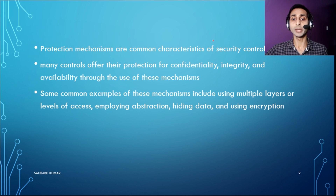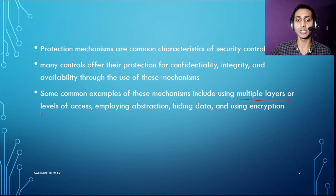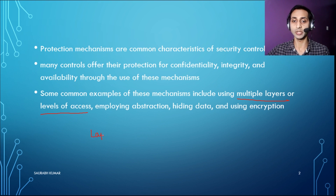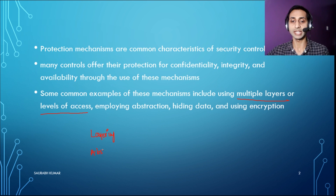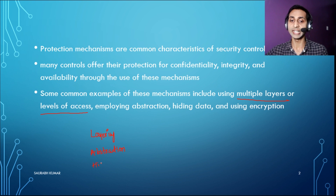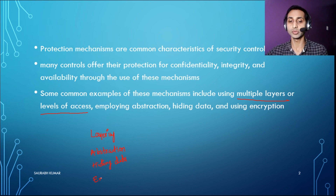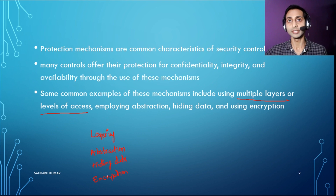Common examples of protection mechanisms include multiple layers — also called layers of access or simply layering. First we will talk about layering, then employing abstraction, third we will talk about data hiding, and then encryption. So these are the four points we are going to discuss in this particular video.